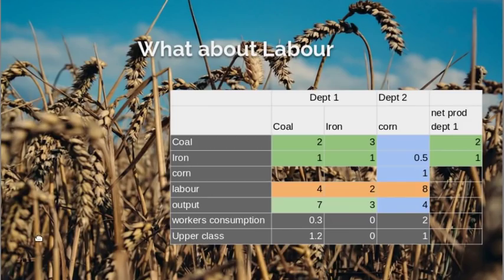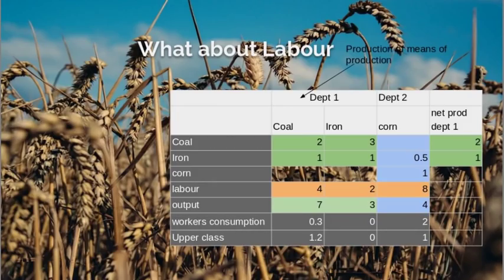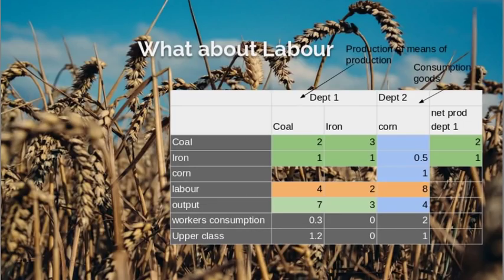The corn industry feeds back on itself and we have these labels: Department 1, Department 2, etc. Department 1 is the term that Marx used to describe those industries that produce means of production — so in this case, the coal and the iron industry. Department 2 is the set of industries that produce consumer goods; in this case, I've shown it just as producing corn.